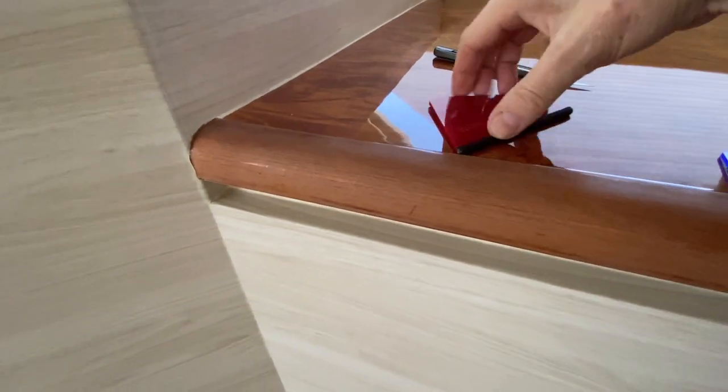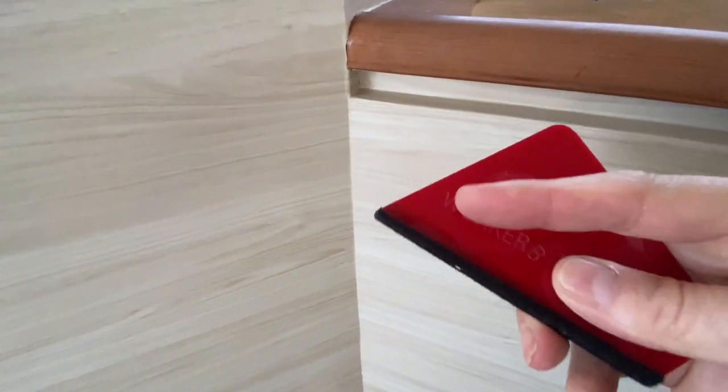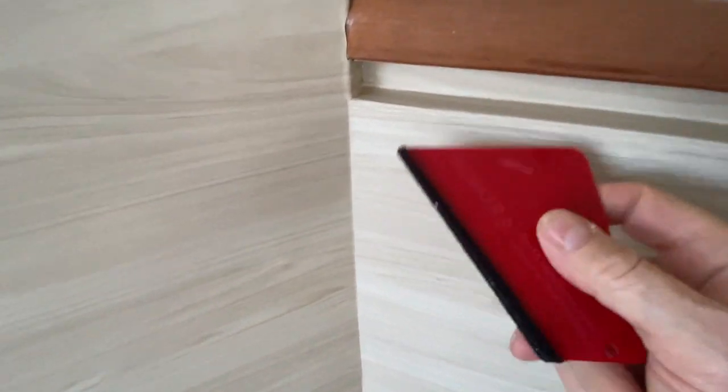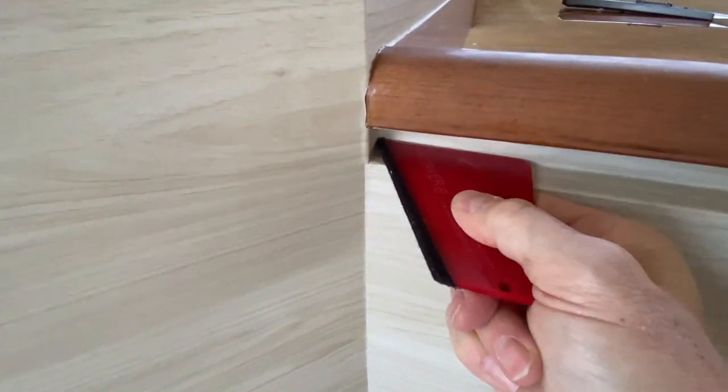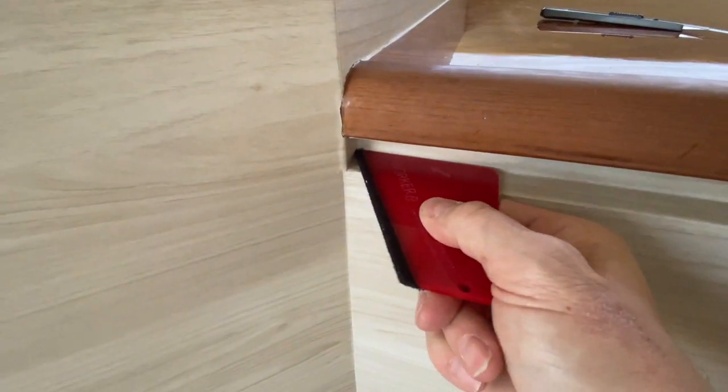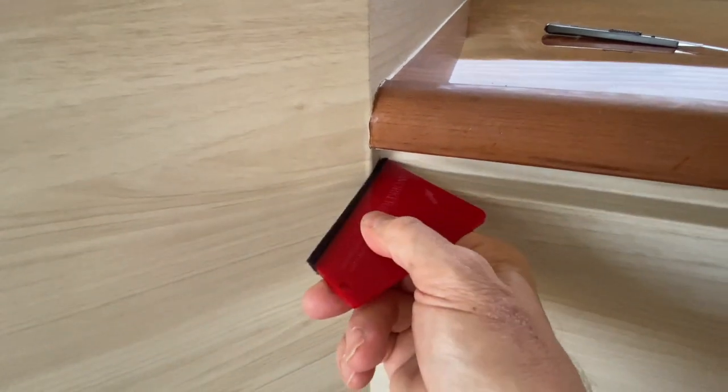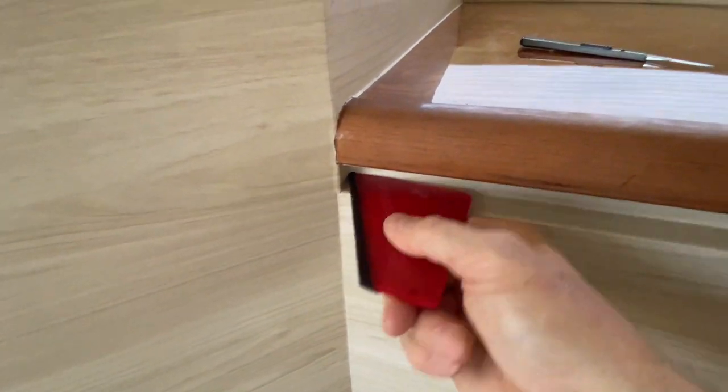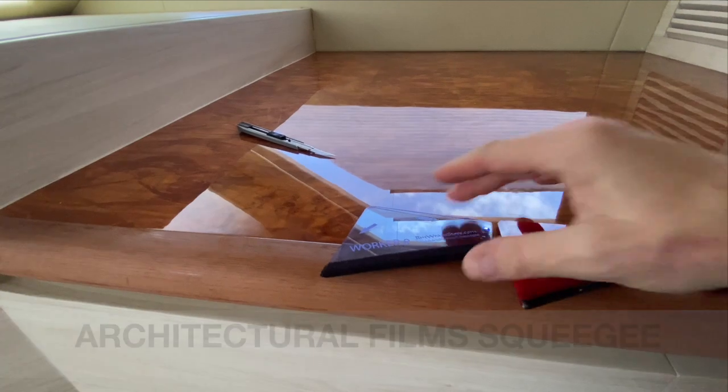Also at an angle, the reason why the squeegee is at an angle is because you can actually dig in and get it as tight as you can. With other squeegees it's very hard because it's kind of straight. That's the reason why I got it this way.